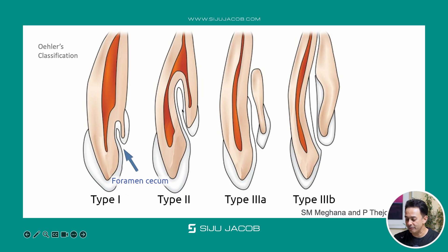Type 2 is also a partial invagination; however, the lesion extends beyond the crown and into the CEJ. The pulp may be involved, but even if it is, it usually remains within the root anatomy. So this invagination usually doesn't communicate with the periodontal ligament outside.